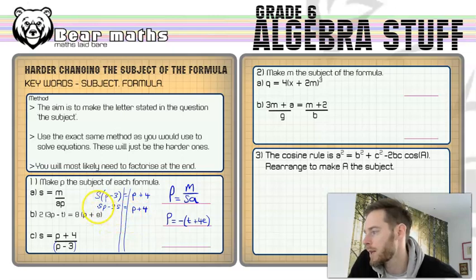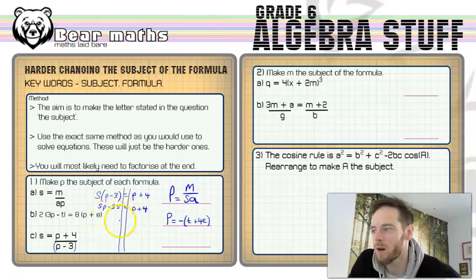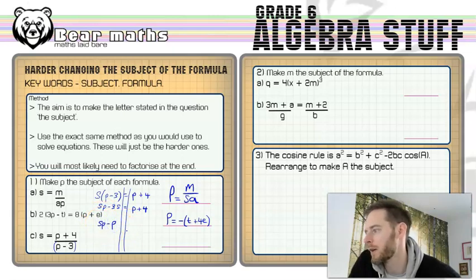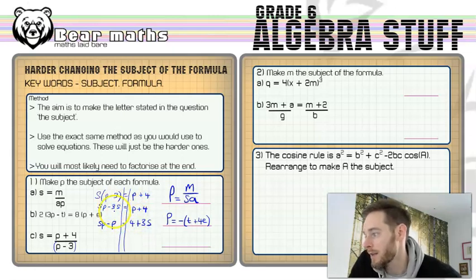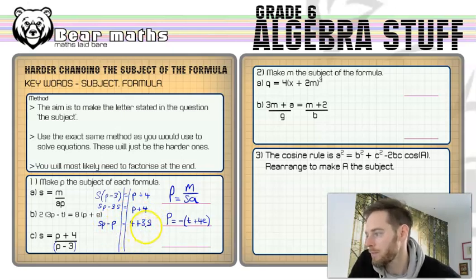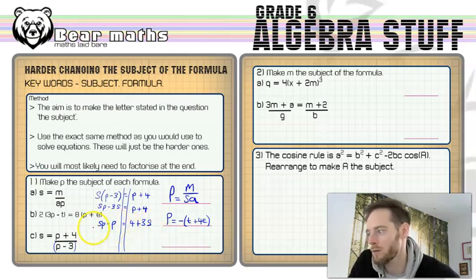We can't numerically simplify sp minus p, but we can write sp minus p. We still have that minus 3s on this side, so I'm going to move it to the other side and make it positive. So sp minus p equals 4 plus 3s — I've moved the negative 3s over to the other side making it positive, and moved the positive p over making it negative.